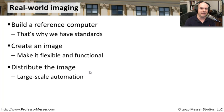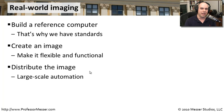The last step is to take that image and distribute it out to many, many different computers. If you are administering computers in almost any size environment, you're going to do this over and over again — because when a computer breaks, this only takes a few minutes to go from a completely empty hard drive to running the Windows 7 operating system. There are a lot of advantages to understanding how to do an image, and if you do it very well, you can save yourself hours and hours of time.